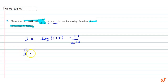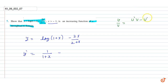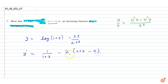So what is y dash? y dash is equal to 1 upon (1 + x) — that is the differentiation of log(1 + x). Now the second term is written as u by v, and we know that differentiation of u by v is equal to (u dash v minus v dash u) upon v square. So differentiation gives us 2 times 1, giving 2, times (2 + x) minus (2x times 1), upon (2 + x) whole square.